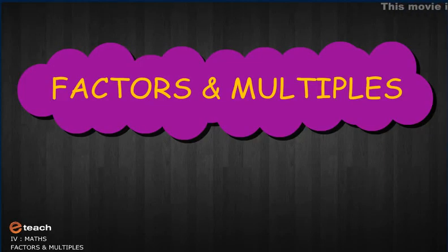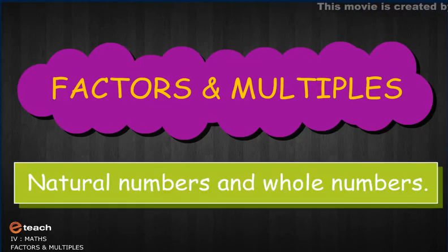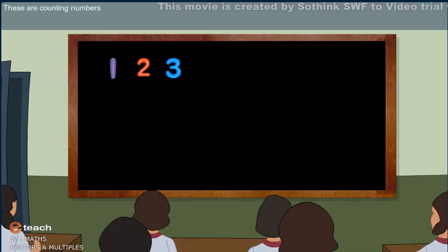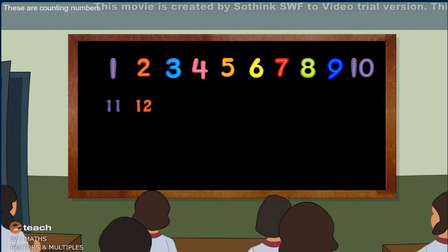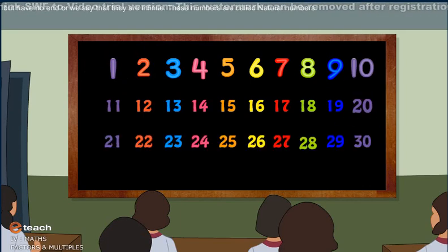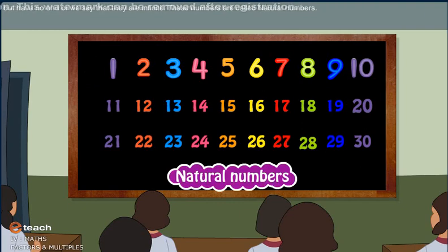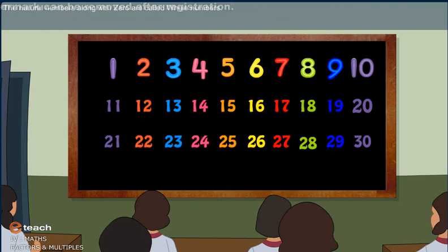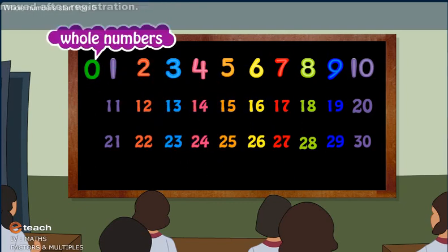Factors and multiples. Natural numbers and whole numbers. These are counting numbers. They start from 1 but have no end — they are infinite. These numbers are called natural numbers. The natural numbers along with 0 are called whole numbers, which start from 0 but have no end. They are also infinite.